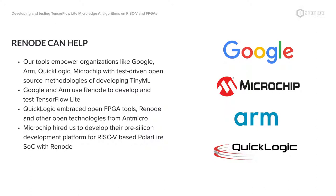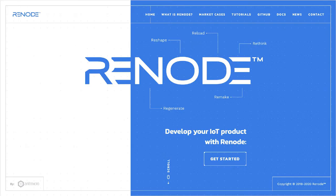We're claiming that Renode, an open source simulation framework we're building, can help with this. There are examples I'll go through today showing how Renode can be of help. There are people like Google, Microchip, ARM, and QuickLogic using it. More specifically, the Google TensorFlow Lite team is using Renode for testing their machine learning work, which is the most relevant one to talk about today. And in the FPGA context, Microchip FPGA and QuickLogic are also working with us closely around these use cases.